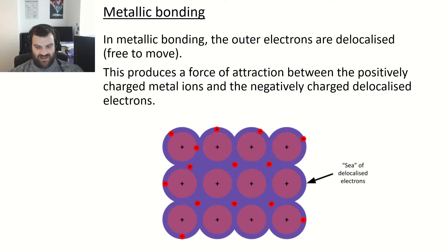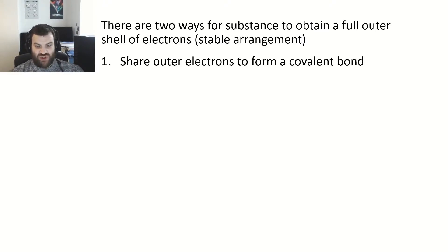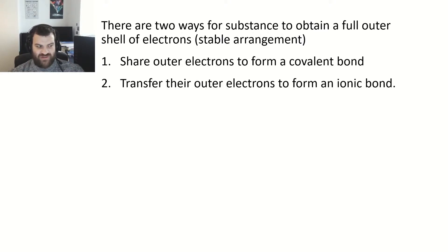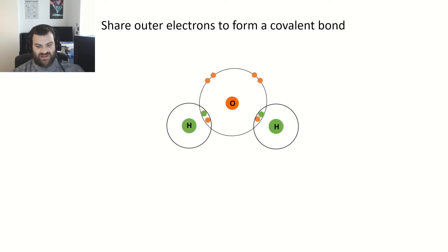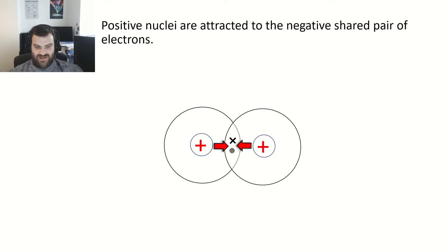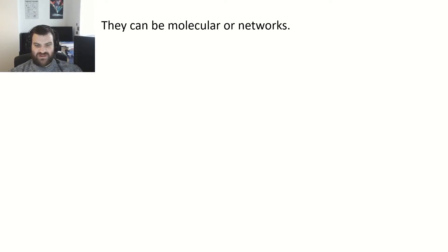Substances can obtain a full outer shell of electrons in two ways: they either share their outer electrons to form a covalent bond, or they transfer their outer electrons to form an ionic bond. In covalent bonding, atoms without a full outer shell overlap so that electrons are shared between them. The positive nuclei of each atom are attracted to the shared pair of electrons — that positive-negative attraction is what's termed a covalent bond.